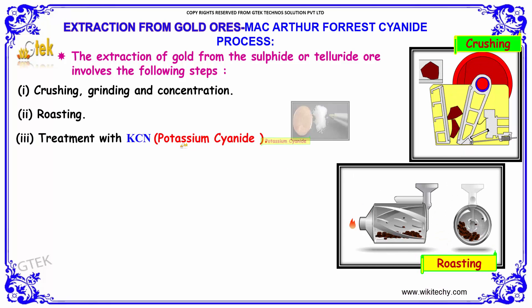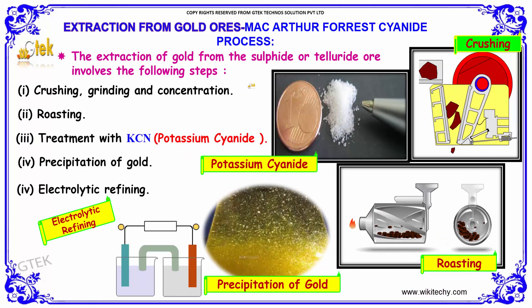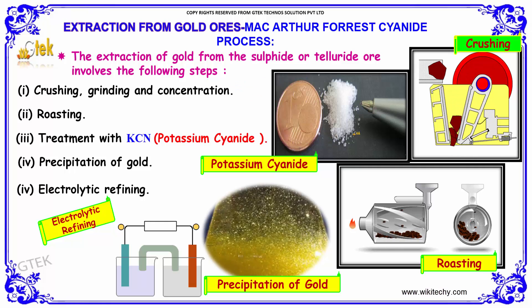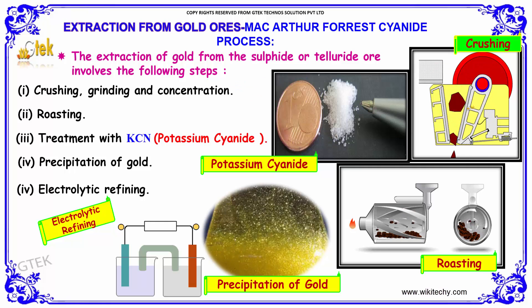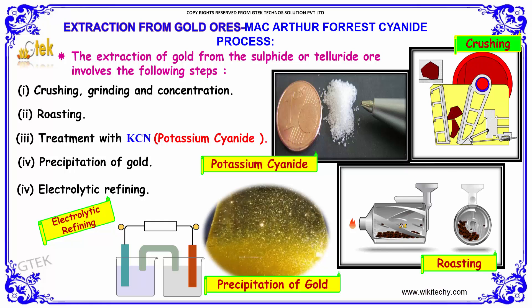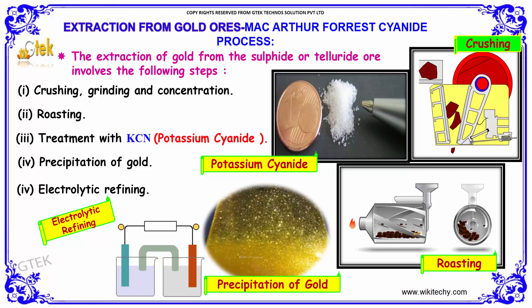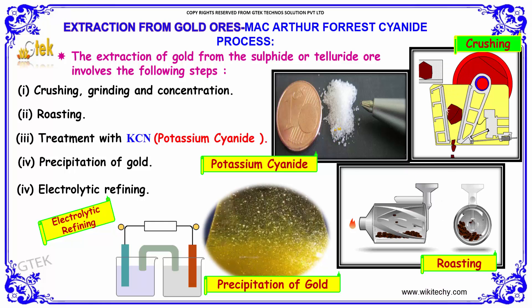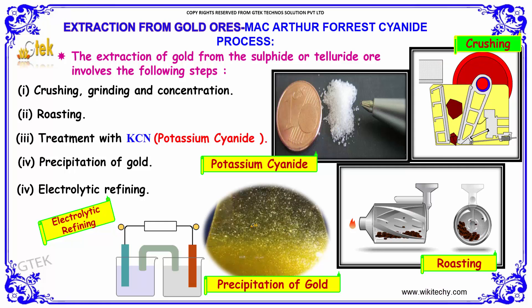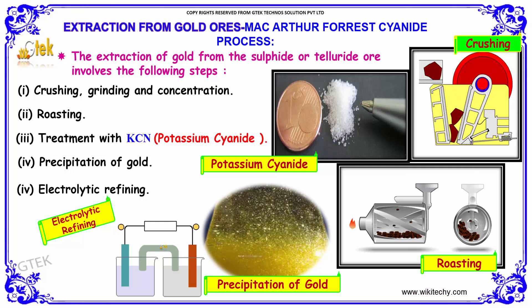The extraction of gold from the sulfide or telluride ore involves crushing and grinding and concentration, followed by roasting, treatment with potassium cyanide, and precipitation of gold, and finally an electrolytic refining process.